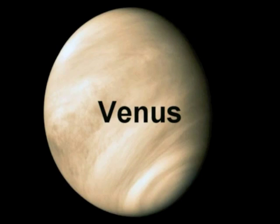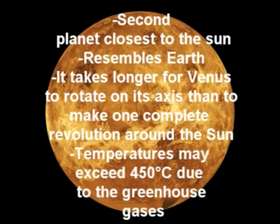Venus is the second planet closest to the sun and is often called Earth's twin due to its similarity to Earth in diameter, mass, and gravity. Venus's orbit around the sun is shorter than Venus's rotation on its axis. Temperatures may exceed 450 degrees Celsius due to the greenhouse effects of the clouds made of carbon dioxide. Atmospheric pressures are 92 times that of Earth. These hostile conditions make exploring the surface with probes for a length of time difficult. Venus is also one of the two planets that rotate east to west, and it has no moons.